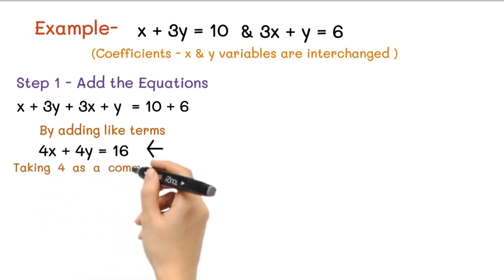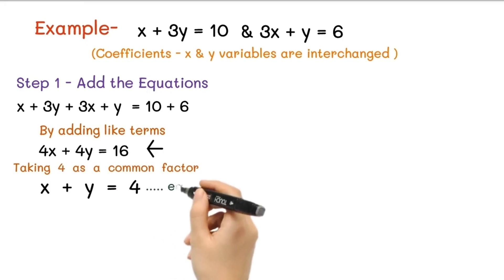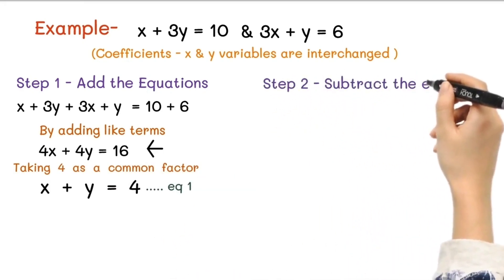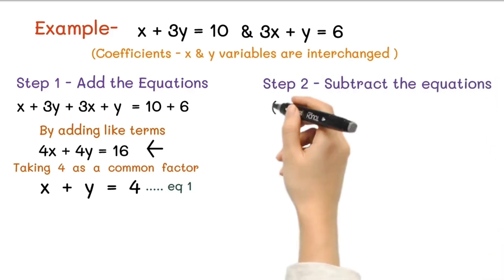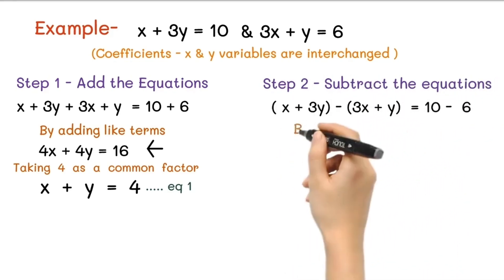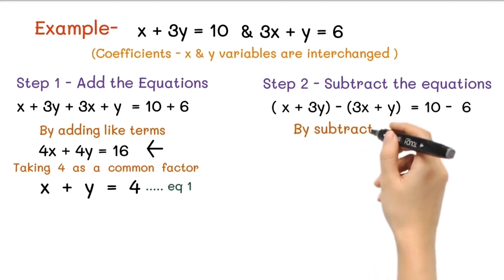Step 2: Subtract the equations. (x + 3y) - (3x + y) = 10 - 6.